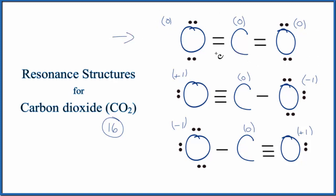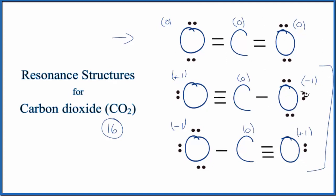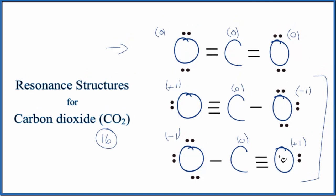We would consider these to be minor resonance structures. They wouldn't contribute much to the overall structure. Note that the final structure would be a weighted average of all of these resonance structures, with this contributing the most to the final structure.